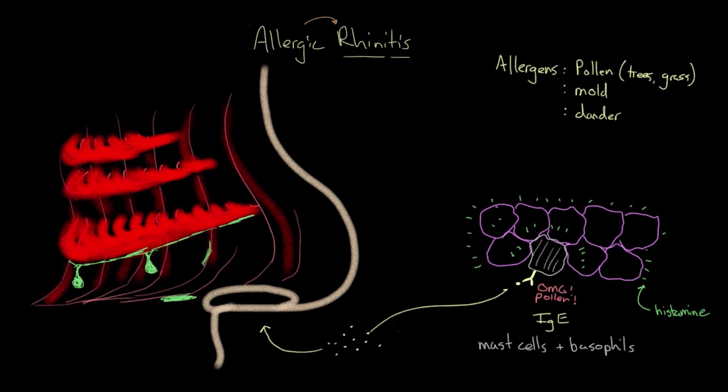It's going to pool on the base of your nasal cavity here. I'll draw a few other drips of mucus. Now I'm drawing this mucus in green, but it's usually actually clear. As you know, or anybody that suffers with allergic rhinitis knows, this can come right out your nose here.